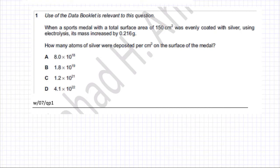The following moles question is about finding the number of particles. The question states when a sports medal with a total surface area of 150 centimeter square was evenly coated with silver using electrolysis, its mass increased by 0.216 grams. So that's the mass of silver that has been deposited on the medal. The question is asking how many atoms of silver were deposited per centimeter square on the surface of the metal.